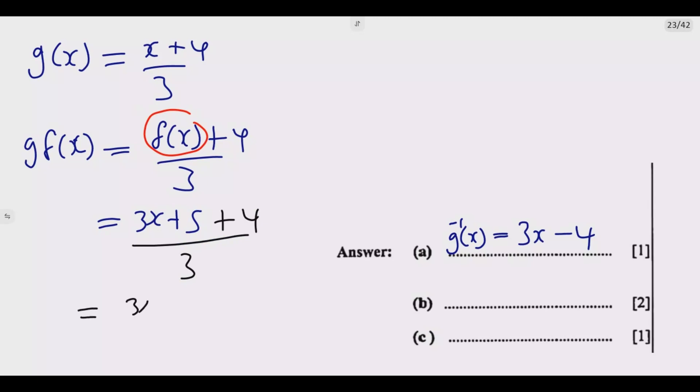This tells me that I'm going to have (3x plus 9) over 3, which when you simplify, 3 into 3x is x, then 3 into 9 is 3. So I'm going to have x plus 3 as a composite function. Then, g(f(x)) equals x plus 3. You get the two marks.